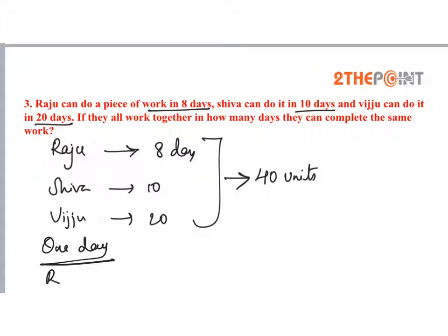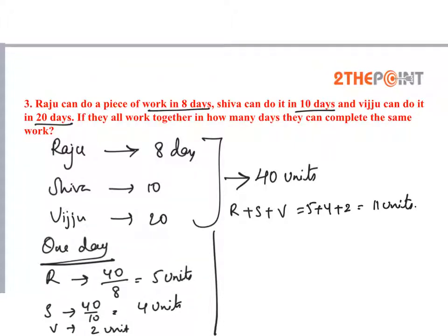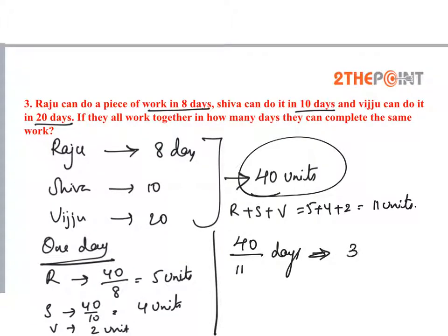Work done by Raju per day is 40 by 8, which equals 5 units. Work done by Shiva is 40 by 10, which is 4 units, and work done by Viju is 40 by 20, which is 2 units per day. If they all work together, Raju plus Shiva plus Viju do 5 plus 4 plus 2, which equals 11 units per day. To complete 40 units, it takes 40 by 11 days, which can also be written as 3 and 7/11 days.